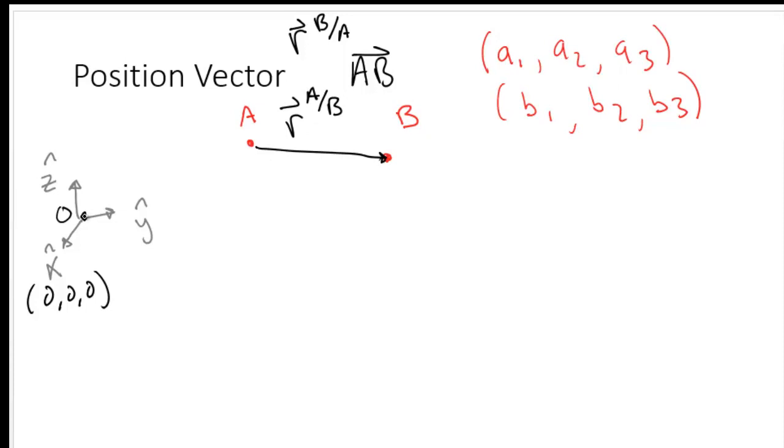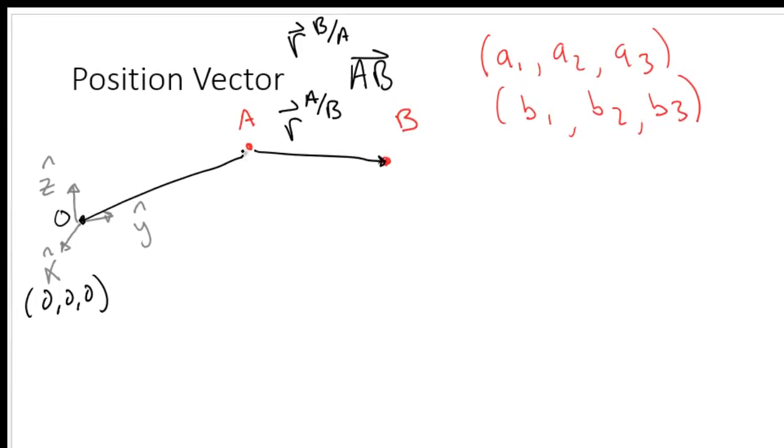From the origin to A, we can make a vector R O to A, and from the origin to B, we can make the position vector R O to B.